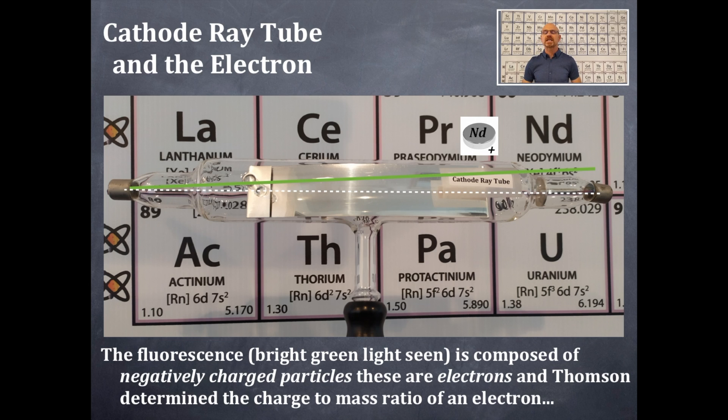And this is the very key important number right here. That charge to mass ratio of an electron is negative 1.76 times 10 to the 8 coulombs per gram of electron. And so that was very critical.